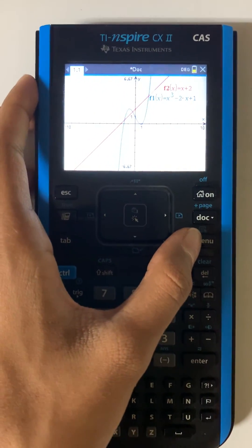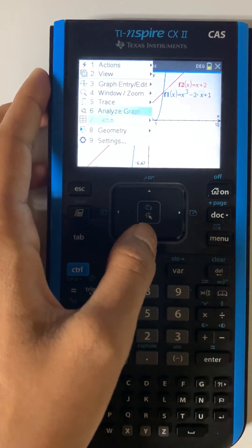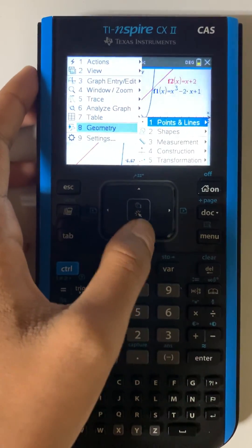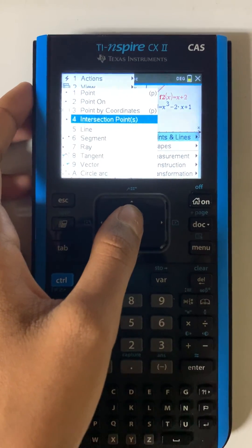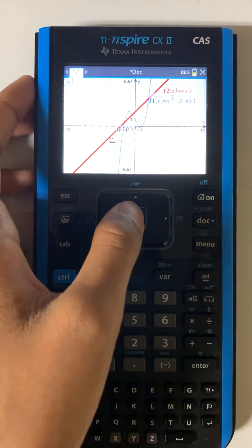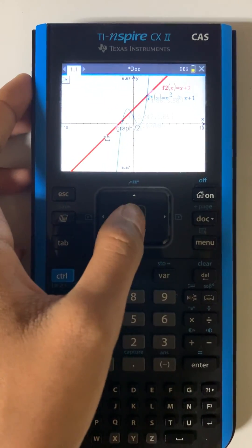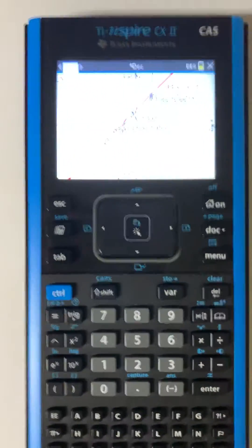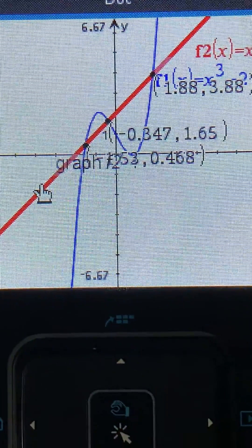After that, you'll press on menu and go to geometry, and points and lines, and go to intersection points. You'll then press on the red line and then here it'll show the intersection points.